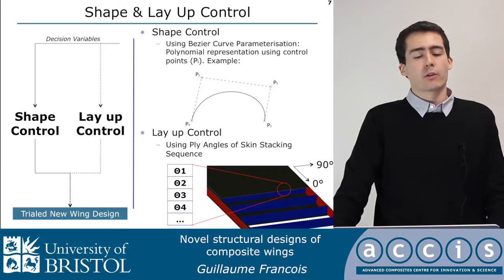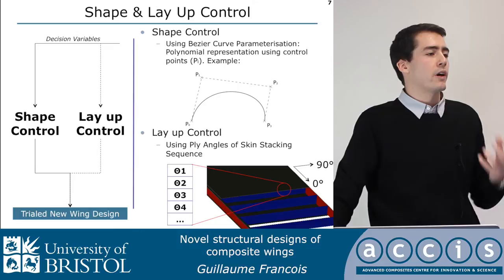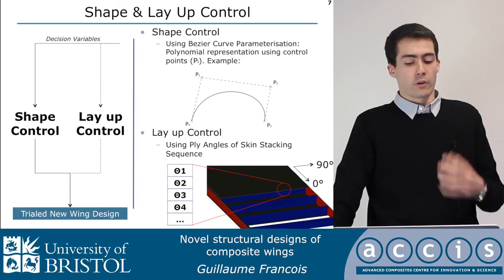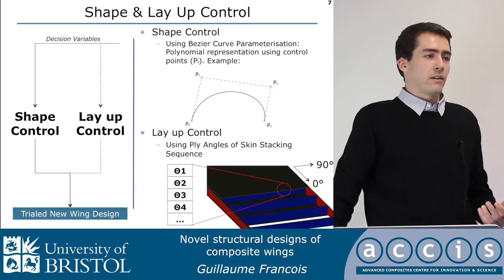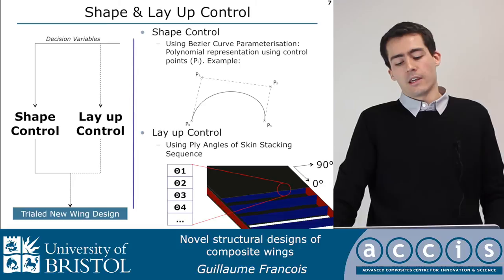Shape control is performed using Bezier curves, which are a polynomial representation. They are useful because you only need to define a set of control points to determine the shape of the polynomial. On this slide I'm showing a third-order polynomial defined by just four control points. The layup control is standard: we optimize the angle of each ply within the laminate, but we do not change the number of plies.